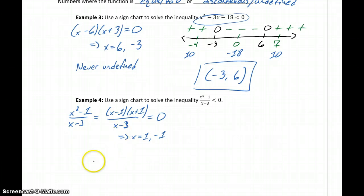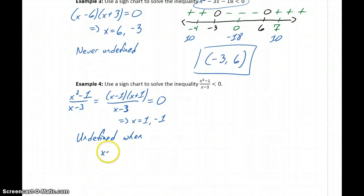So then we need to determine where is this function going to be undefined. Our function will be undefined whenever x - 3 is equal to 0, which means a third point to consider is what's happening around x equals 3.